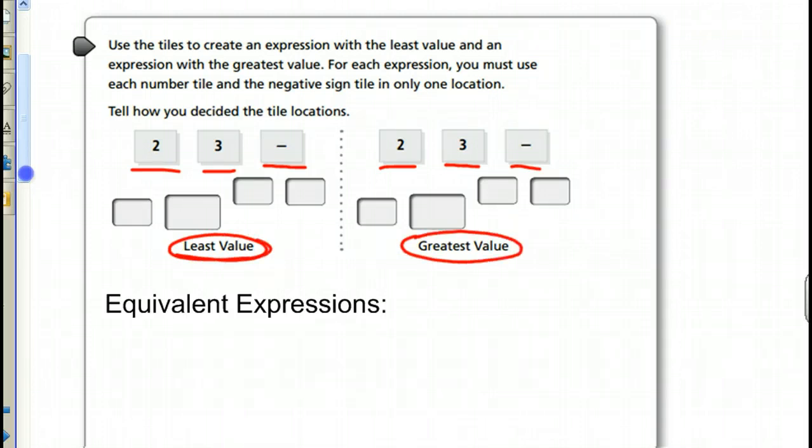So, least possible value, we want our base number to go here, so we'll probably put our base number as 2. So, that takes care of our 2. A greater value, we should probably put our base number as 3, because 2 is greater than 3. So, that takes care of that one. Now, it says we can only stick one number in each place and one negative in one place.